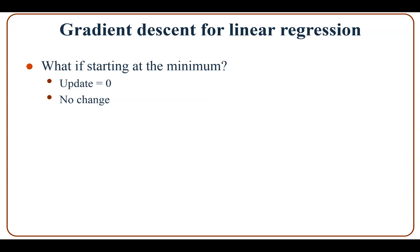What if we start right at the minimum? If by chance we select theta_1 equal to theta-opt, then the update is always zero and there is no change in each iteration.